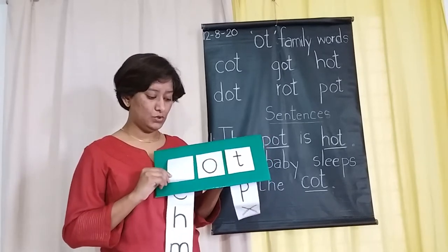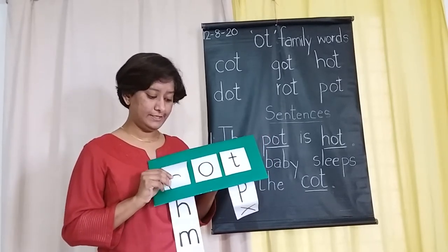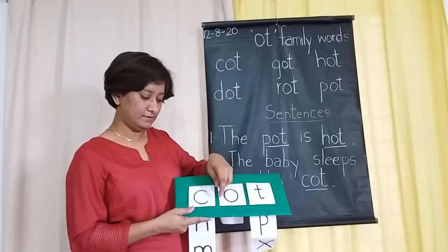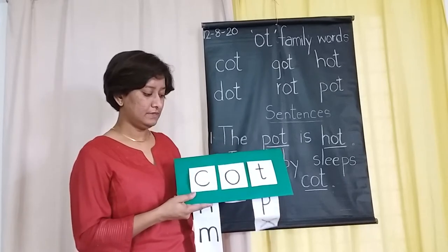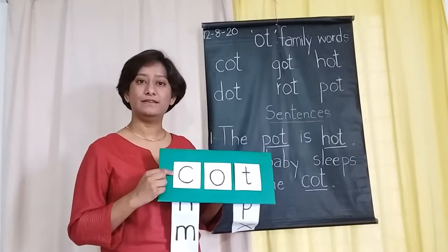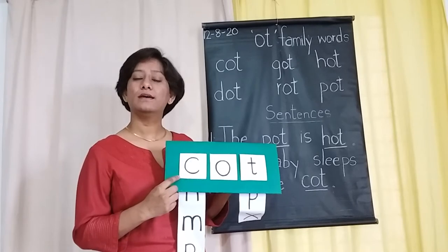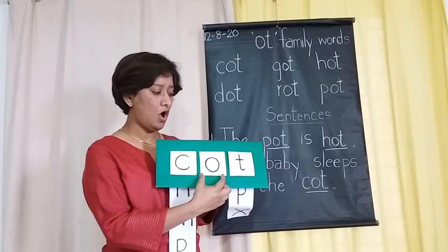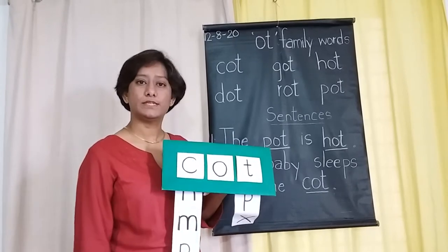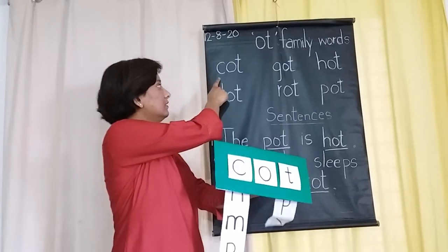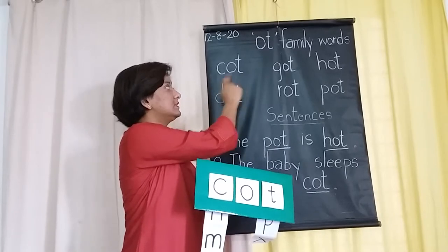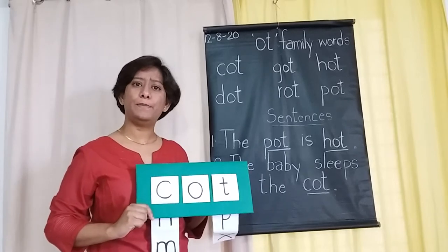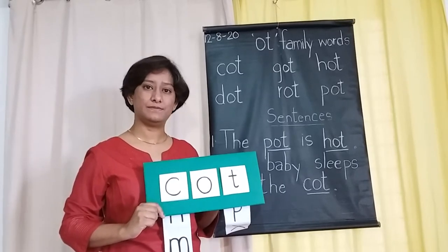Now we are going to add a letter to the blend. The first letter is C. C says K — O-T. K, O, T — Cot. That's the first new word we learned. Cot is a place where a small baby sleeps. Cot.